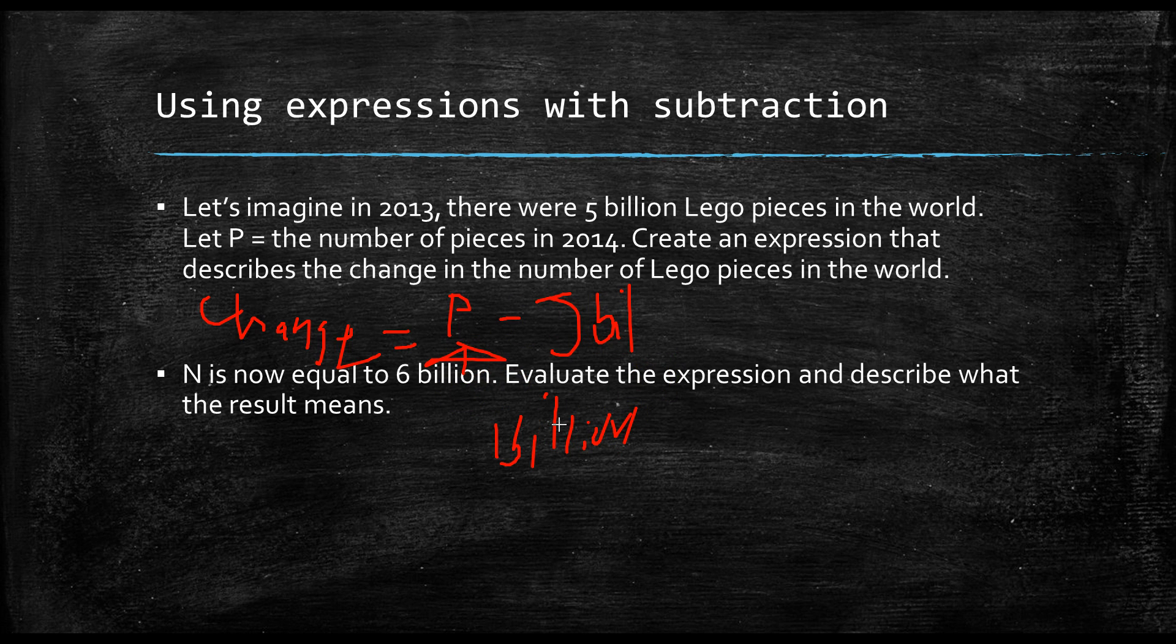What does the answer mean? It means that the number of pieces in the world increased by 1 billion. In 2013, there was only 5 billion, and we added 1 billion pieces to equal 6 billion pieces in 2014. That's what the result means.